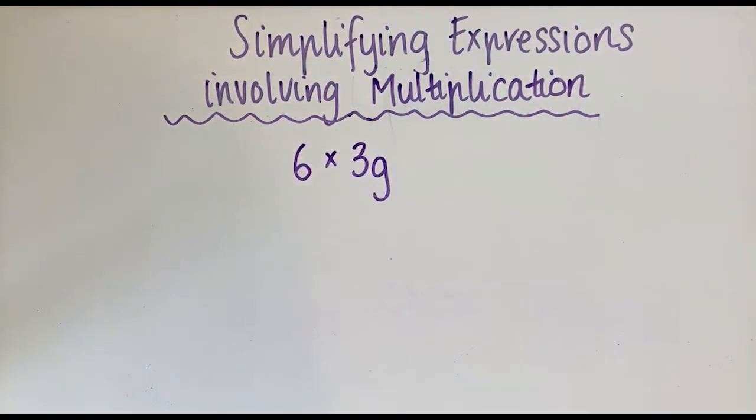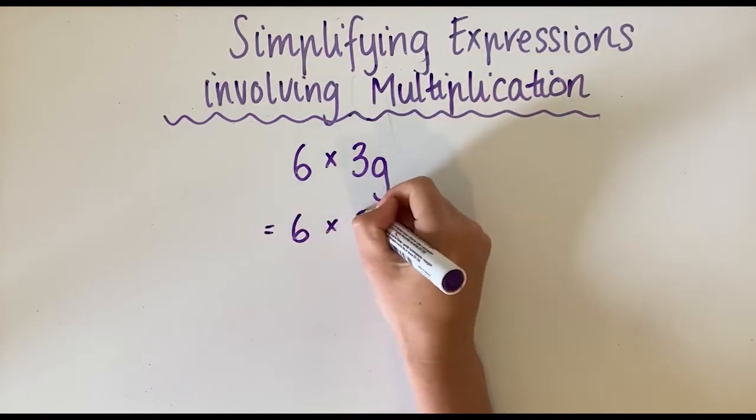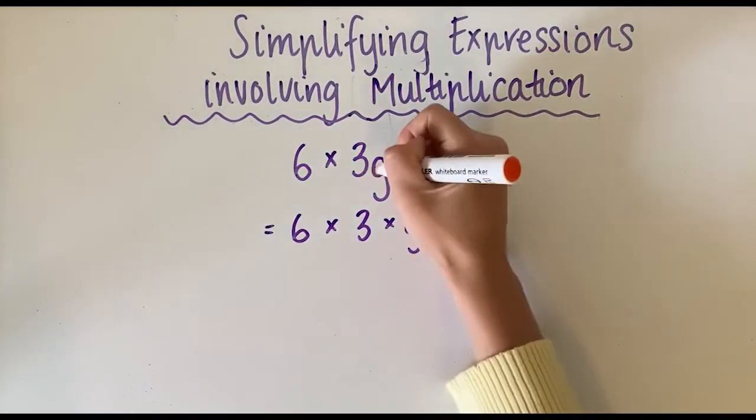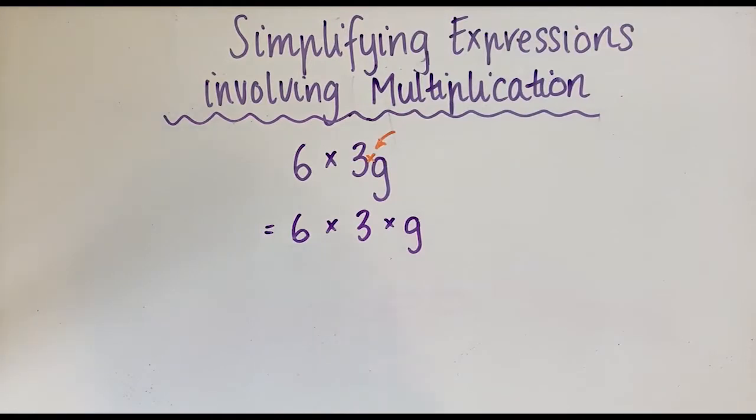For this one, you can see there's a multiplication sign in the middle. What we need to do first is stretch it out. We're going to get 6 × 3 × g because there's actually a multiplication sign sitting between that coefficient and that variable. So we're stretching it out.